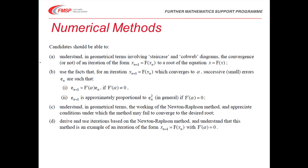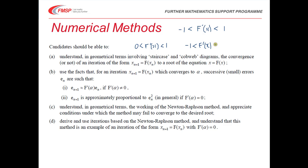Candidates have got to be able to understand about staircase and cobweb diagrams. They've got to understand whether or not the convergence of an iteration will take place and know the conditions for that to happen. Convergence will take place assuming that F'(x) is between negative 1 and positive 1. That is the general condition for convergence. For a staircase diagram, it occurs when F'(x) is between 0 and 1, and a cobweb diagram will occur when F'(x) is between minus 1 and 0.